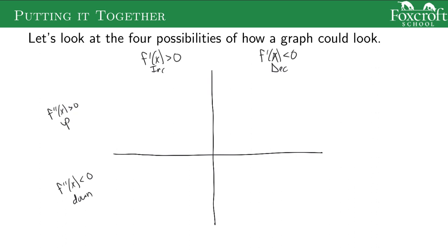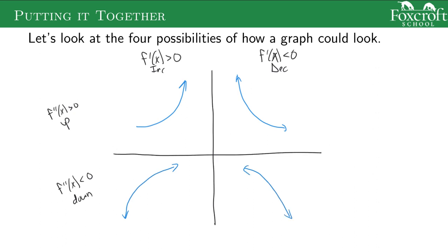If our graph is increasing and concave up, it looks like the right half of a cup — going upward and bending upward. If it's decreasing and concave up, it looks like the left side of the cup — going down but still holding water. If it's concave down but increasing, it looks like the left side of a frown — going upward but facing downward. And decreasing and concave down is the right side of the frown — angled downward like a frown and going down.